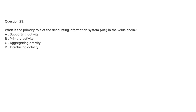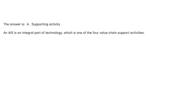Question 23. What is the primary role of the accounting information system, AIS, in the value chain? A. Supporting activity. B. Primary activity. C. Aggregating activity. D. Interfacing activity. The answer is A, supporting activity. An AIS is an integral part of technology, which is one of the four value chain support activities.